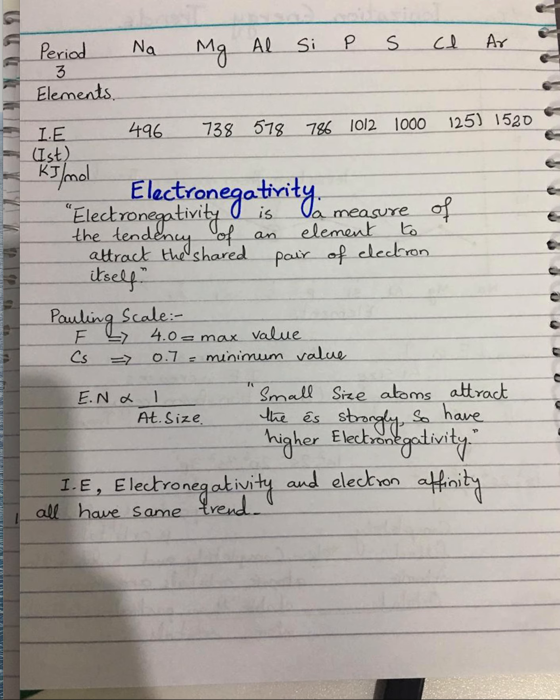Chlorine, sulfur, and phosphorus are non-metals, and they also don't have any tendency to lose electrons. They are gainers of electrons so that they can achieve stability. There is an anomalous behavior in this case, which will be discussed next.